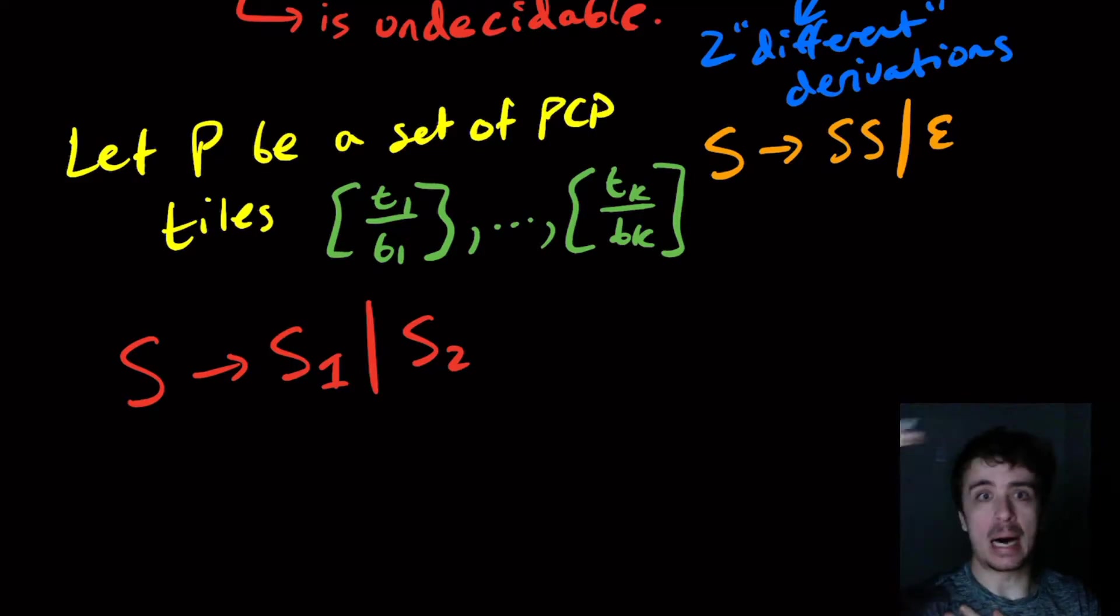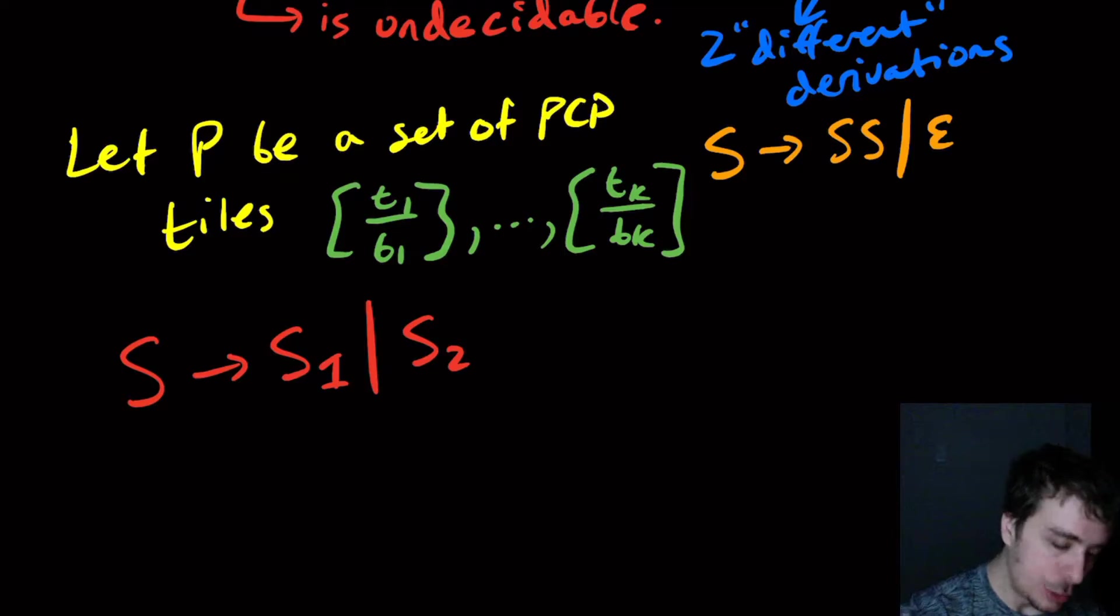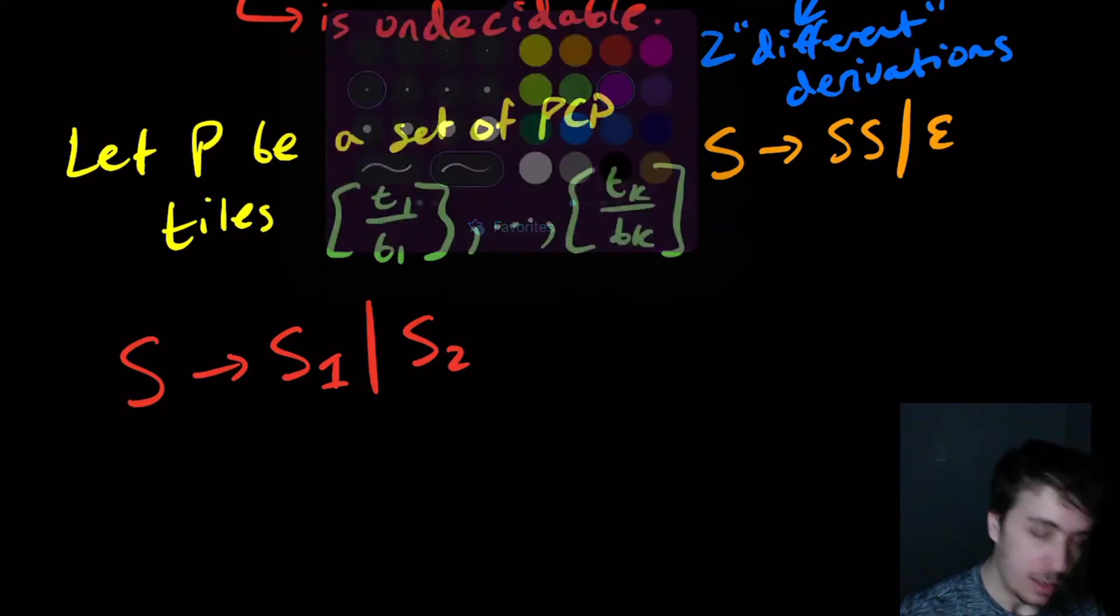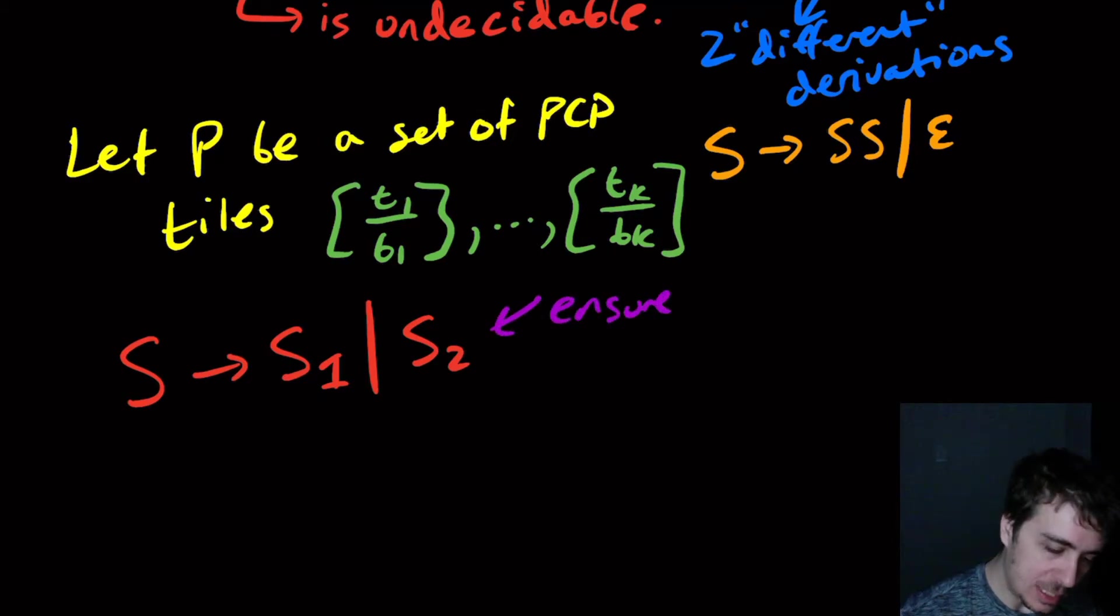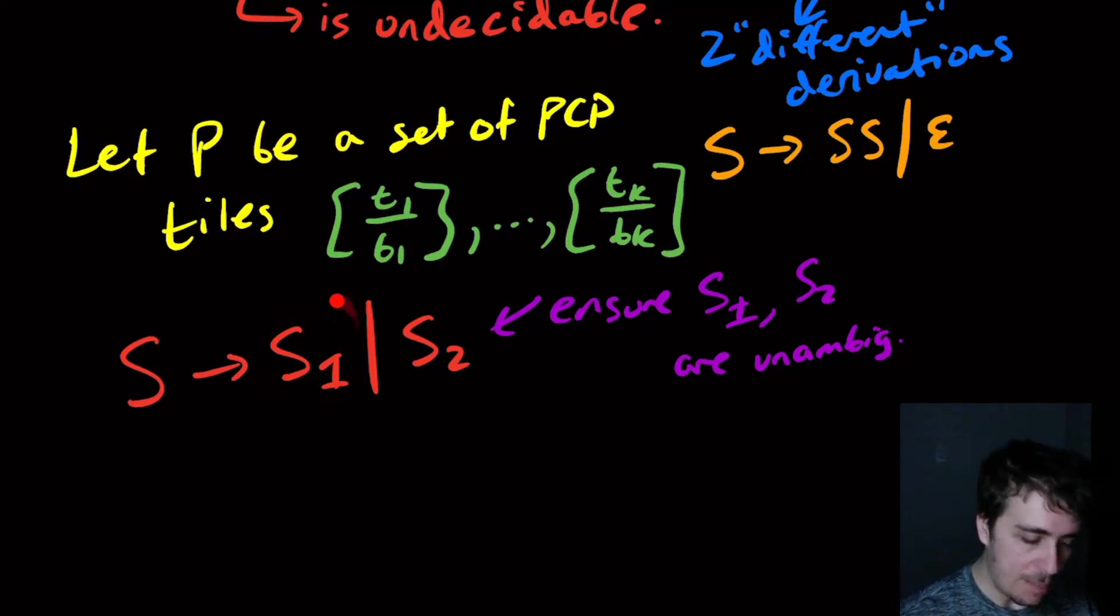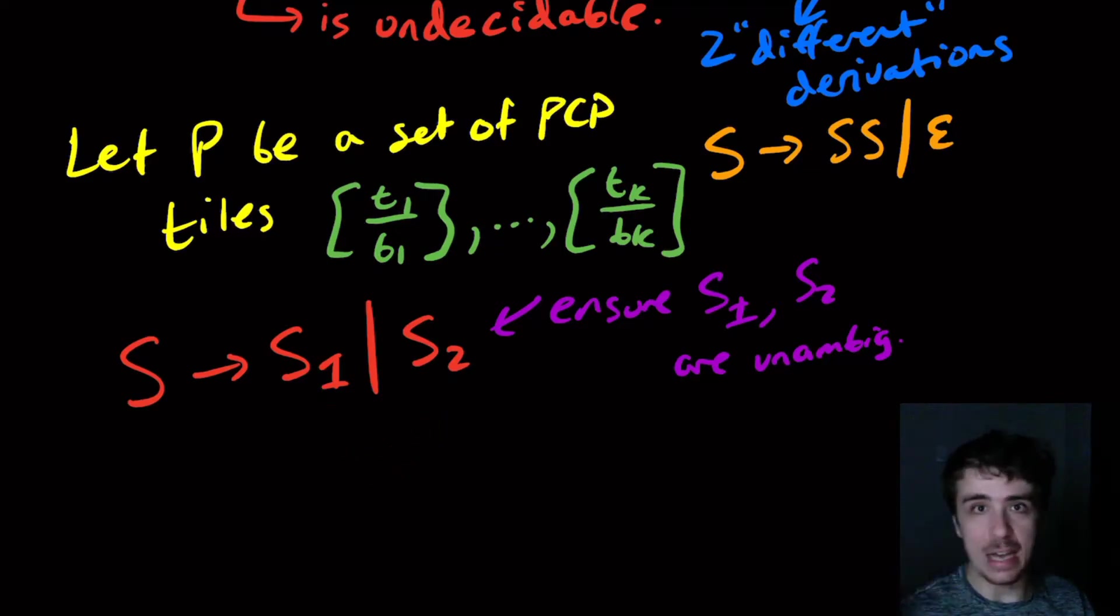It will be ambiguous if there's a choice of a string that could be made with S1 and a string that can be made with S2 that are exactly the same, meaning the top string equals the bottom string. One thing we need to be careful of is that the ambiguity can lie anywhere. So we need to ensure that S1 and S2 are unambiguous, because if there's some ambiguity with S1 alone, that won't help us. The only ambiguity I want is with these two variables right here.